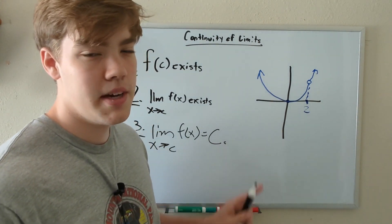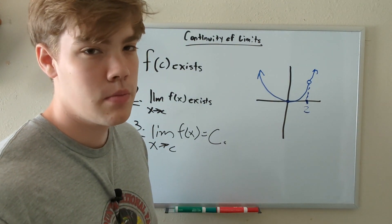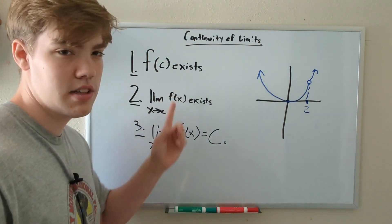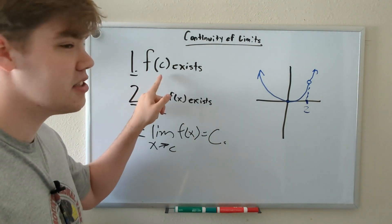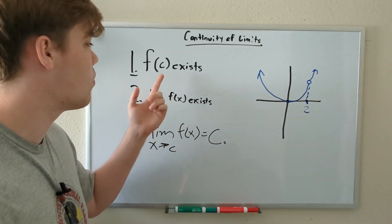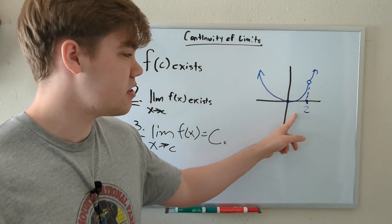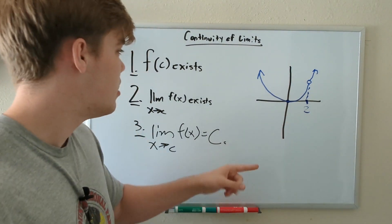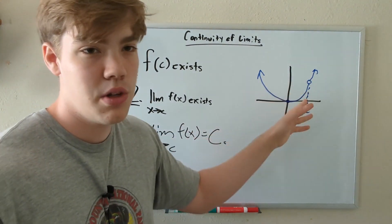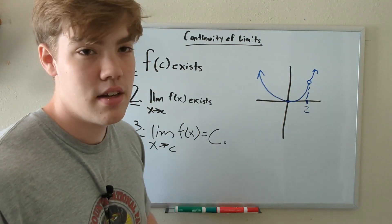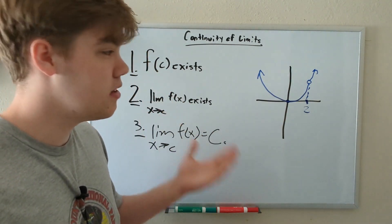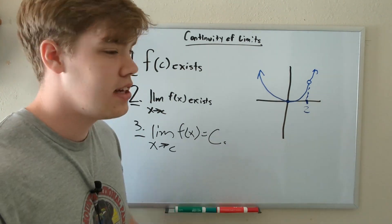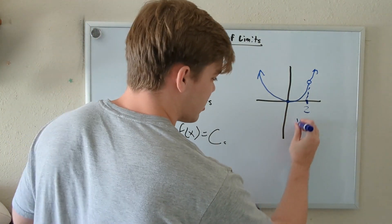Is this function continuous at X equals two? Well, let's find out. Let's refer to our list of rules. Number one, does this function exist at whatever we're approaching? So in this problem, I stated that we wanted to see if this function is continuous at X equals two. And well, we have a hole. This is a hole on the graph. And because of that, we already broke rule number one. The function doesn't exist at X equals two. Therefore, this function is not continuous.